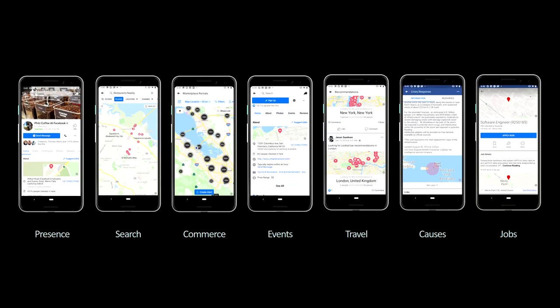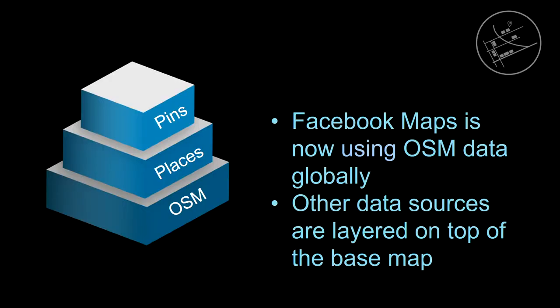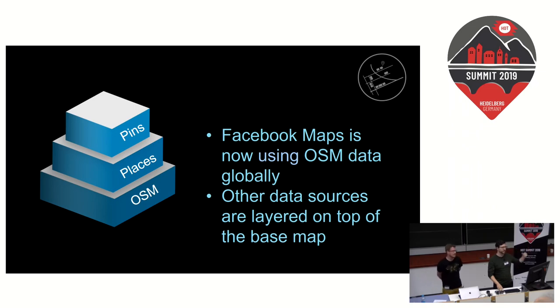You might be wondering where we use maps at Facebook — it turns out we use them in a lot of places. High quality maps are actually quite valuable to our users, and you'll see them across search, commerce, events — basically anywhere that we need to display geospatial data. We show OSM as the base map background, then layer in application data on top of that, including places data, places pages, and individual pins.